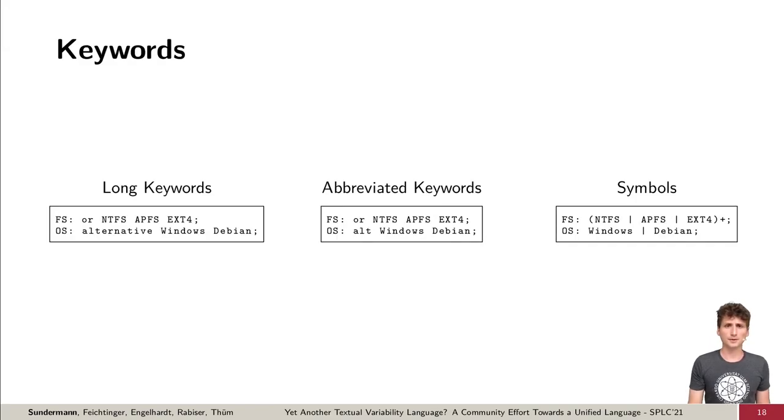We also identified three ways to specify keywords. They can be either long or written out, like for alternative, or abbreviations where we take alt for alternative, or symbols which are typically similar to grammar notations, which can be seen on the right here. Here the participants preferred long keywords.